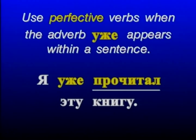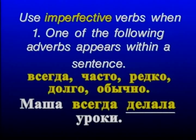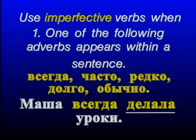Now let us see when we are supposed to use imperfective verbs. Use imperfective verbs when one of the following adverbs appears within a sentence: всегда, часто, редко, долго, обычно. By now you should have memorized your adverbs. Маша всегда делала уроки — Masha would always do her homework. Всегда tells us we are dealing with a repeated, habitual action.